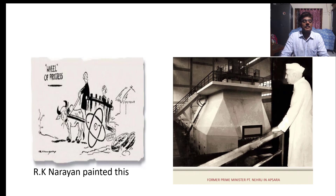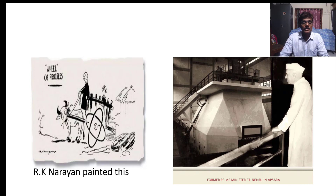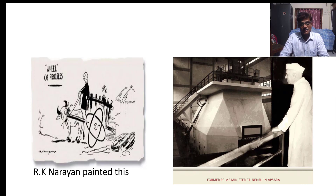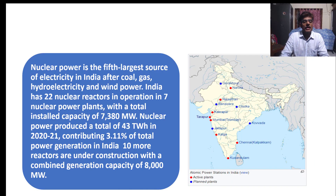RK Narayan painted a picture where he used an atom in place of the wheels of a black cart — wheels of progress. So nuclear power is going to be a wheel of progress, depicted in a very nice painting.